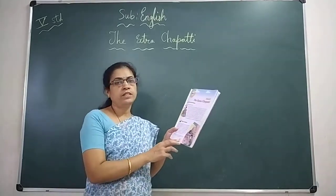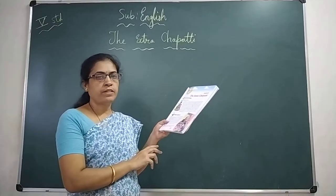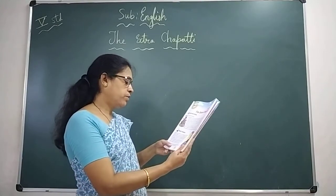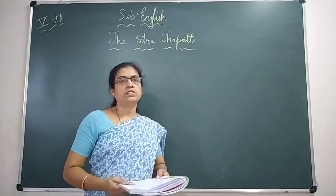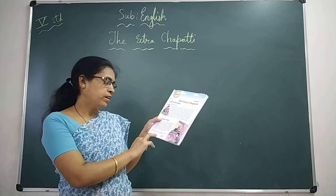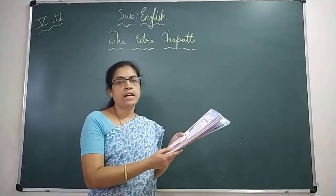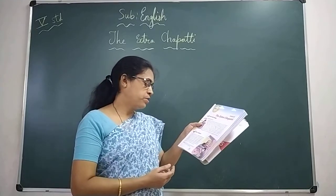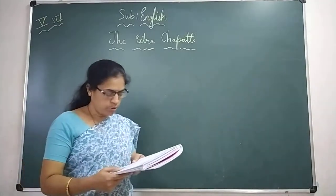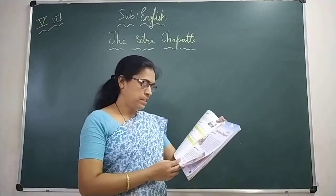Every day a hunchback came and took away the chapati. A hunchback means a person with a hump on his or her back — you can see in the picture. He expressed his gratitude in some strange words. Gratitude means thankfulness — you can see the meaning in the textbook. He used to say: 'The evil you do remains with you. The good you do comes back to you.' This went on for days.